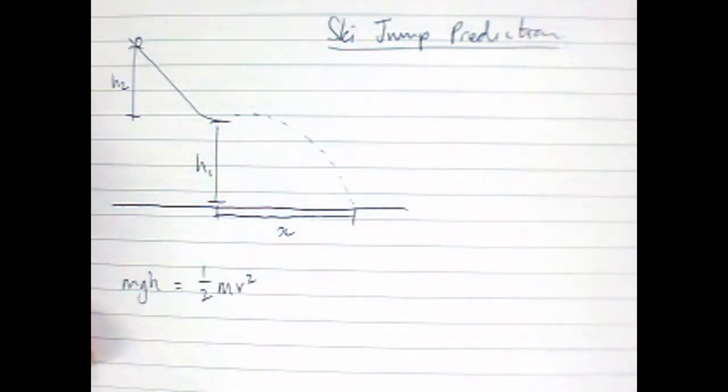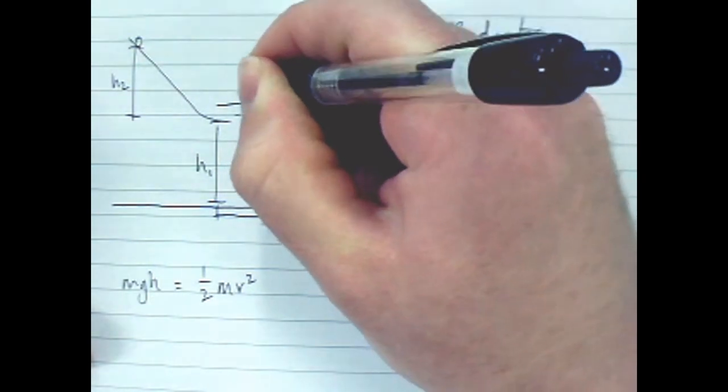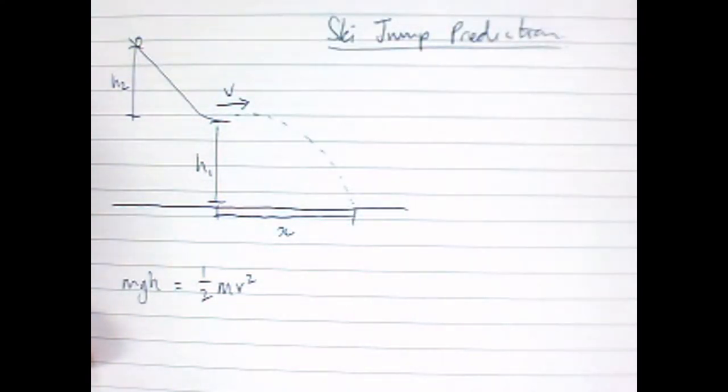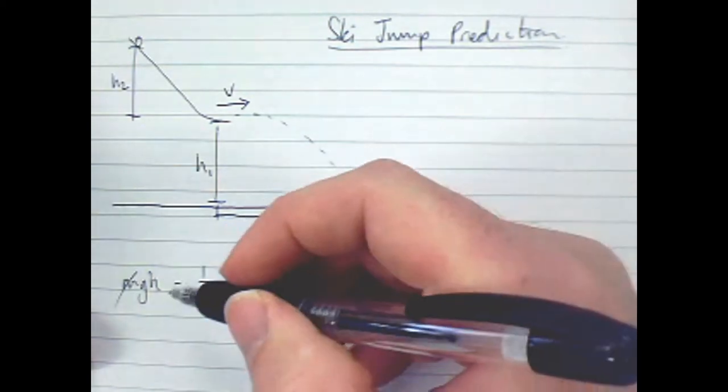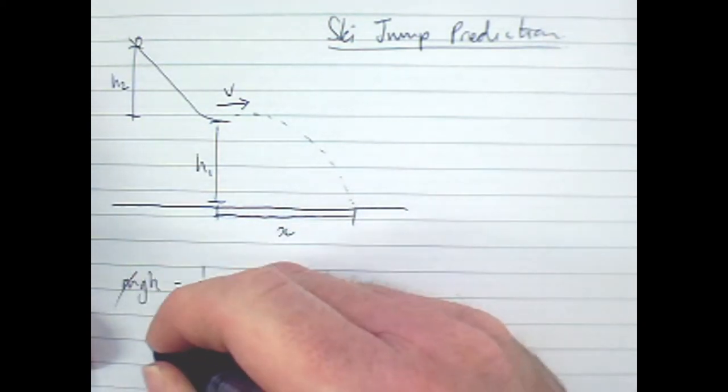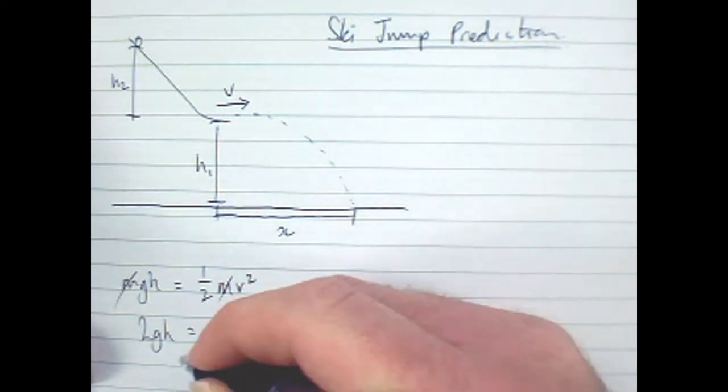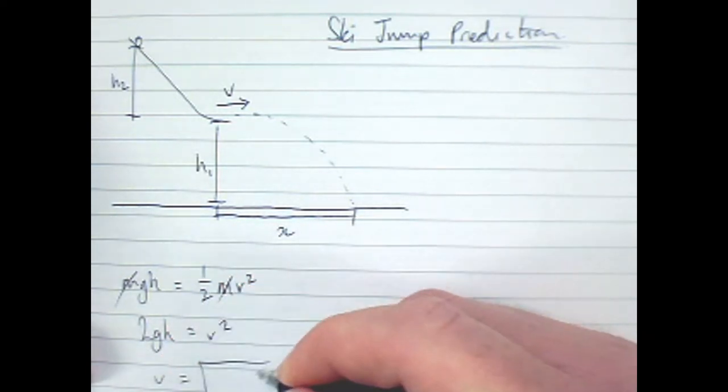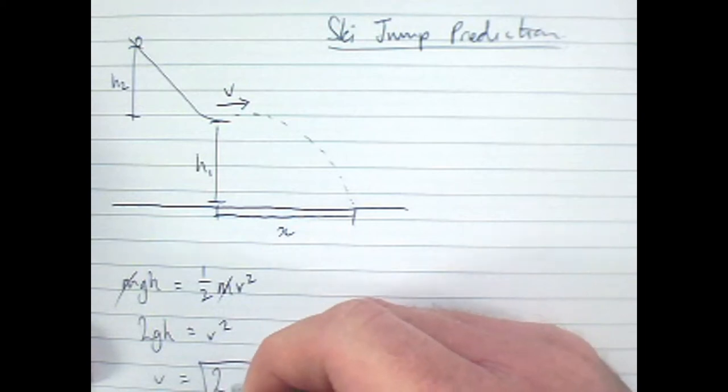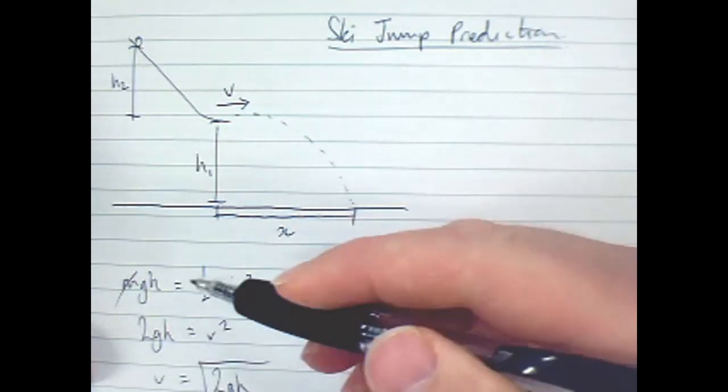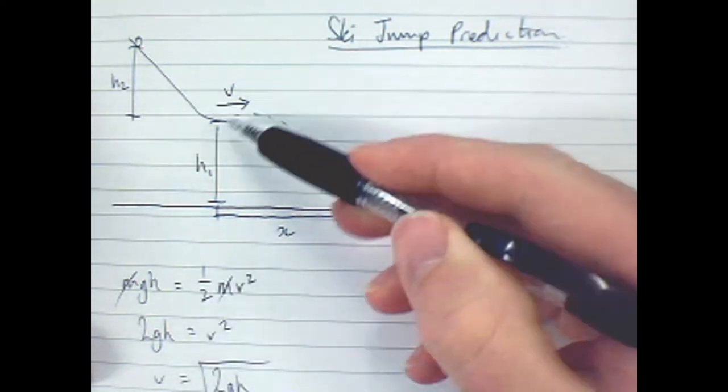So the first thing to do is to get an expression for gravitational potential, an expression for kinetic, simplify and rearrange so that we've got the V, the velocity, there. So you can see hopefully the M's cancel. And then I can rearrange times by 2, 2GH equals V squared, so V is root of 2GH.